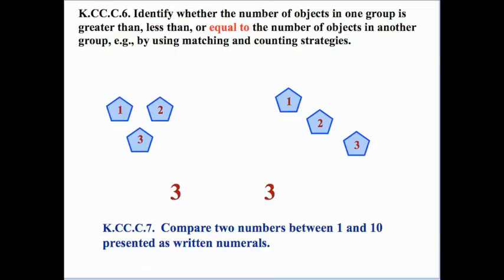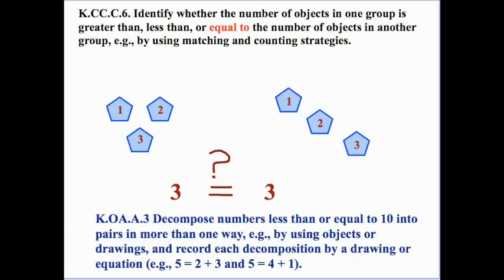There's yet another standard we can address: KCC.C.7 — compare two numbers between 1 and 10 presented as written numerals. After doing comparisons with physical objects, we can also write it down symbolically and compare them as written numerals. So orally or in written language, we know that 3 is equal to 3. Would kindergarten students be expected to use the equal sign? The answer is yes — standard K.OA.A.3 states to record each decomposition by a drawing or equation, so students are expected to write this symbolically using the equal sign.